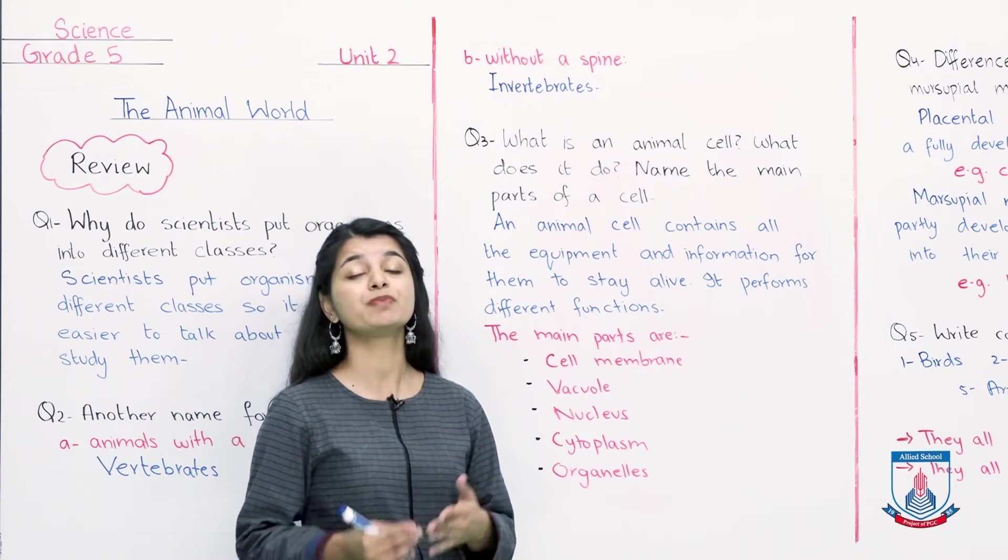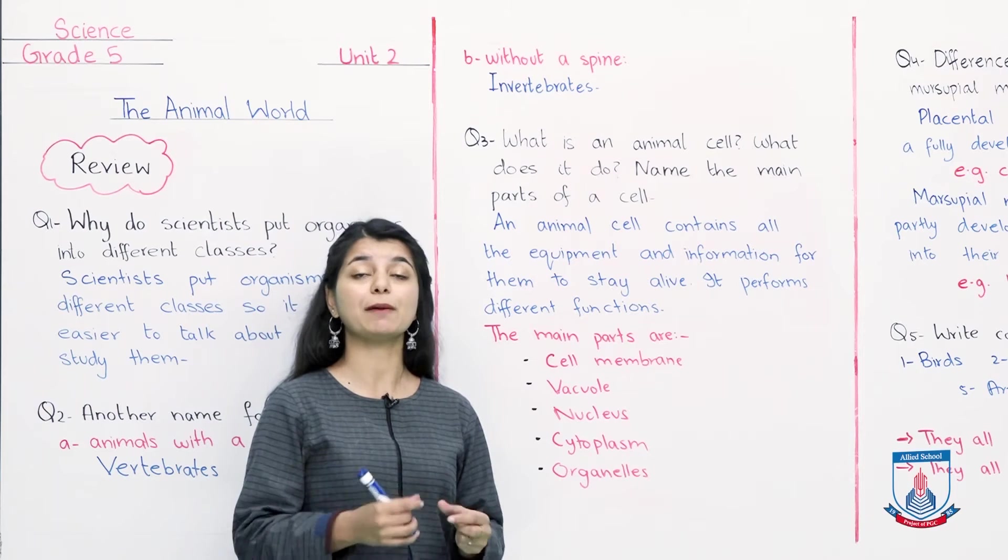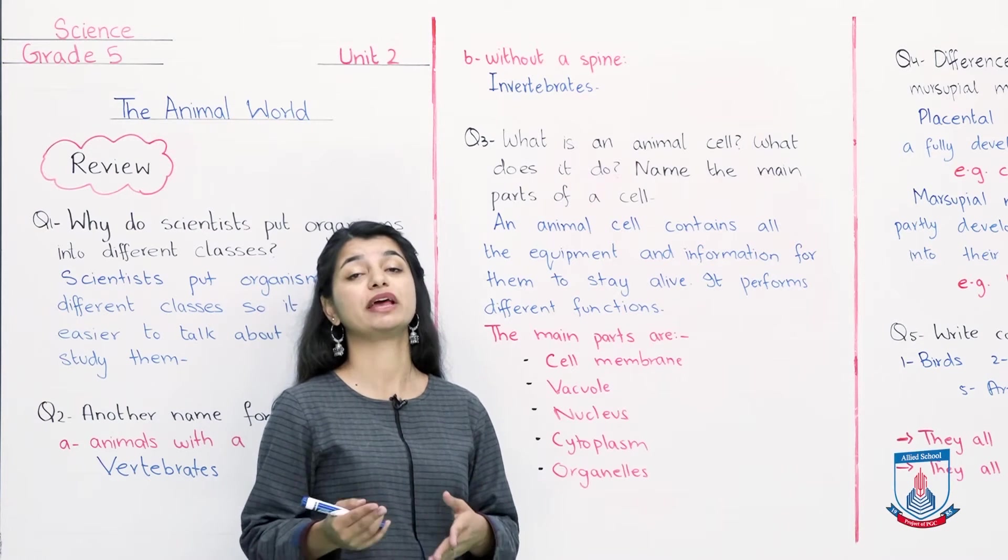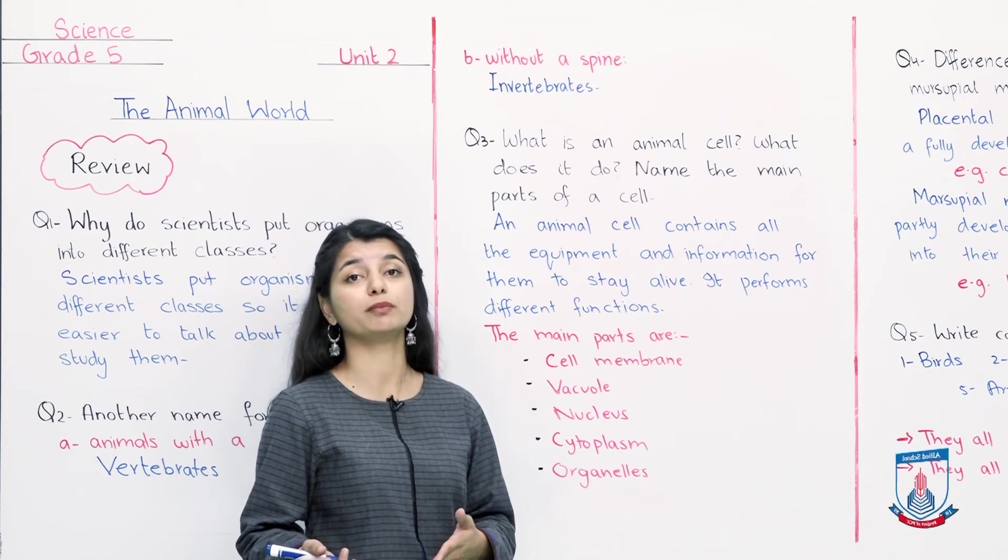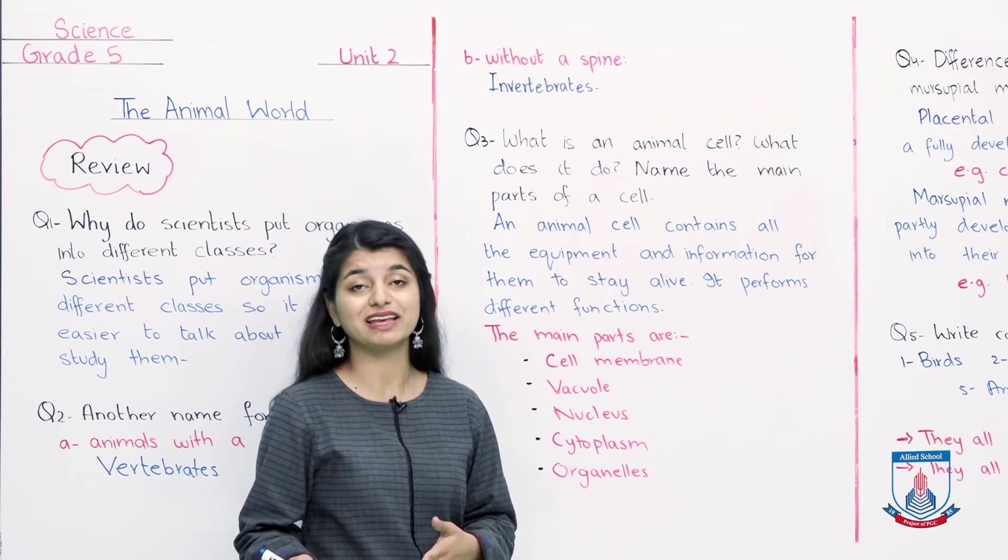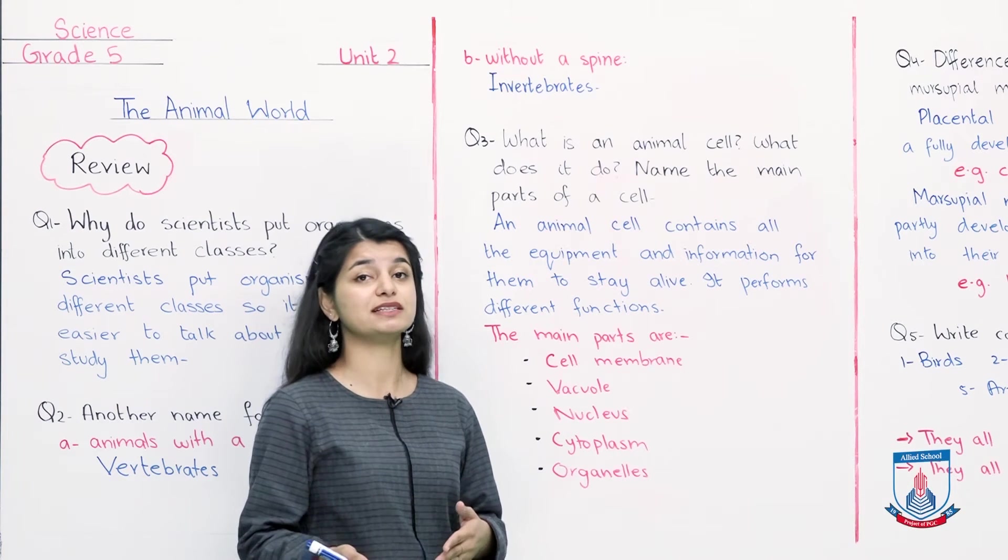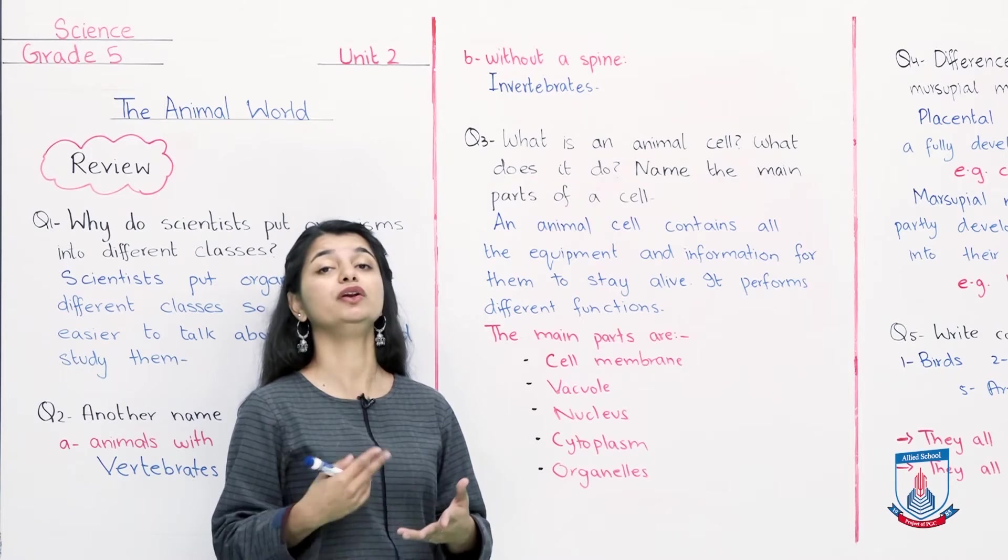It performs different functions. You want to show that it is better to explain there are different cells performing different functions. For example, you can give red blood cells, you can give the nerve cells. So that is something that you can do on your own.